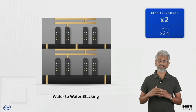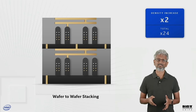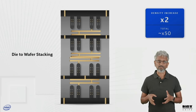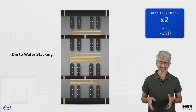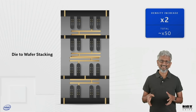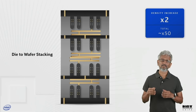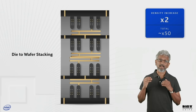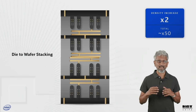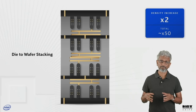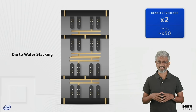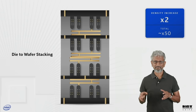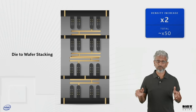Then we will enter an era where die stacking and packaging technologies become very important. Wafer-on-wafer stacking could lead to a potential 2x density improvement, followed by die-on-wafer stacking for another 2x improvement in gate density. Everything I described here today is happening in labs across the world. These trajectories take time, but the vision will play out over a decade or more.